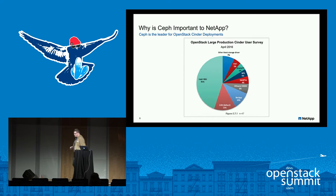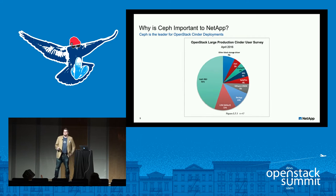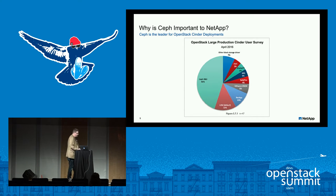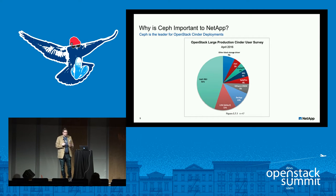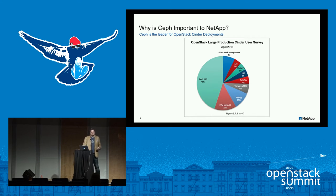Why does NetApp care? We were the first enterprise storage vendor to be part of the OpenStack Foundation. We had the first Cinder drivers and co-created Manila, the file service. This is actually six-month-old data from April in Austin: almost half of all block storage deployed inside OpenStack today is on Ceph. We absolutely need to understand the technology to be a trusted advisor to our customers and partners — you can't ignore it when roughly 50% of block storage is Ceph.